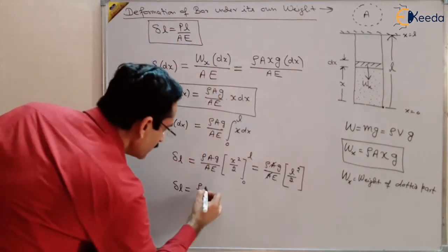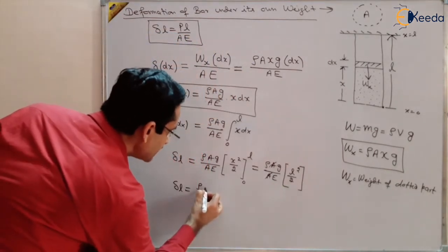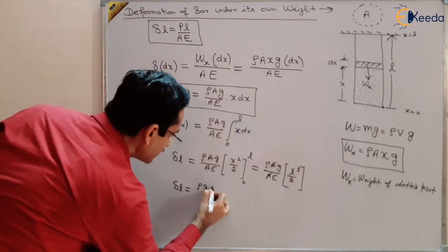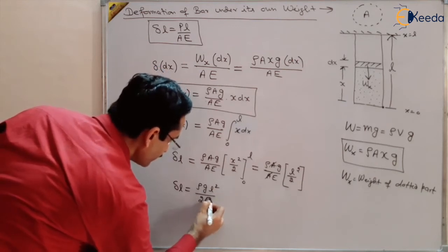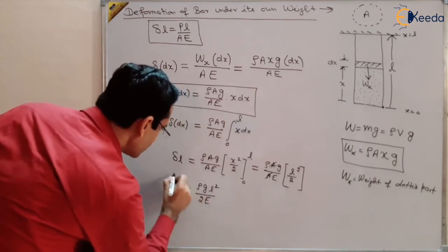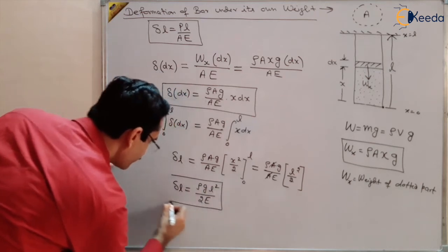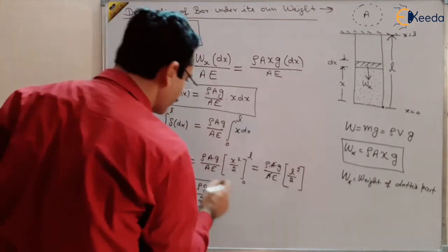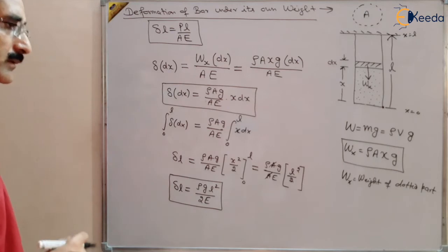The A in numerator and denominator cancels, giving the total deformation: δL = ρgL² / 2E. This is the deformation in the bar due to its own weight.